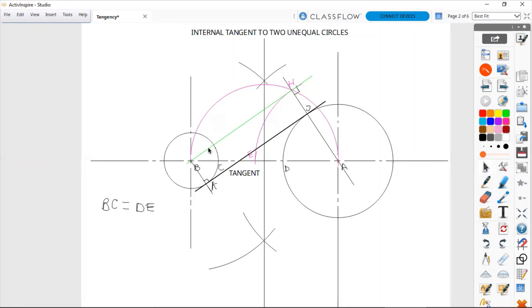And it is a distance of BC away from the first tangent line. So what we are doing is drawing a tangent line to a circle which has a radius of what I'm going to show.